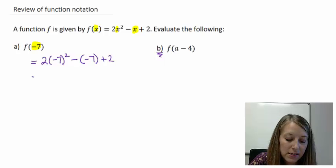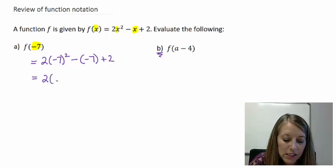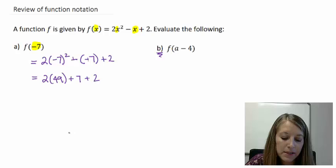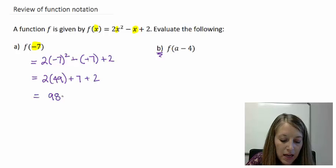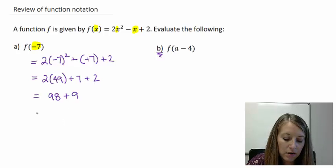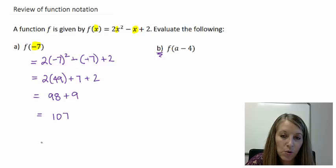So to simplify this, I take my negative 7 and I square it to give me 49. Here my double negatives cancel out, so that gives me plus 7. And then just copy down my plus 2. 2 times 49 gives me 98. I can go ahead and add these two numbers back here, plus 9.